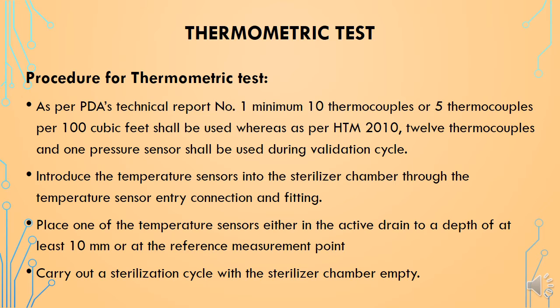Introduce the temperature sensors into the sterilizer chamber through the temperature sensor entry connection and fitting. Place one of the temperature sensors either in the active drain to a depth of at least 10 mm, or at a reference measurement point. Carry out the sterilization cycle with the sterilizer chamber empty.